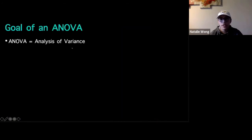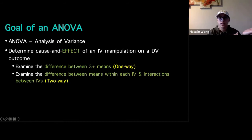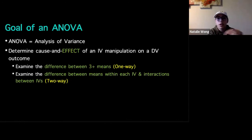ANOVA stands for analysis of variance. Similar to t-tests, we're looking at cause and effect — 'effect' is kind of your keyword when writing interpretations. The main difference from t-tests is that we're looking at differences between three or more means for a one-way ANOVA, or looking at differences between means per independent variable plus an interaction for a two-way ANOVA.